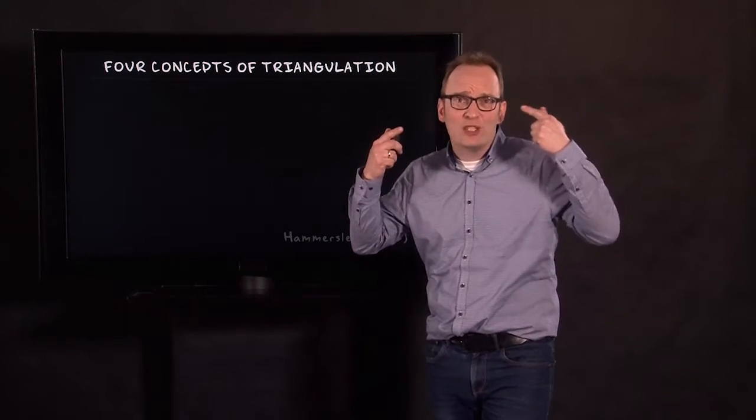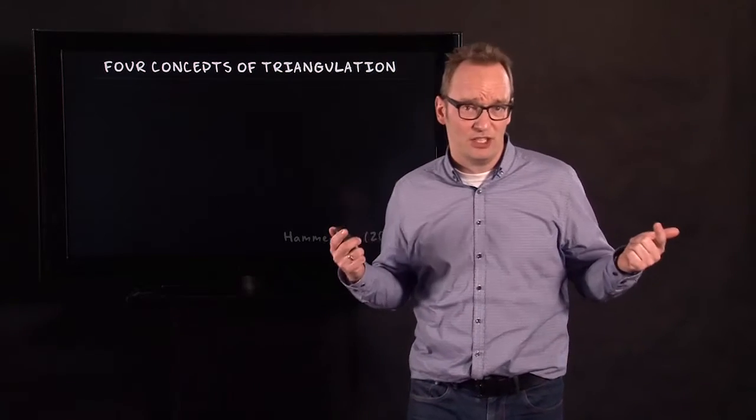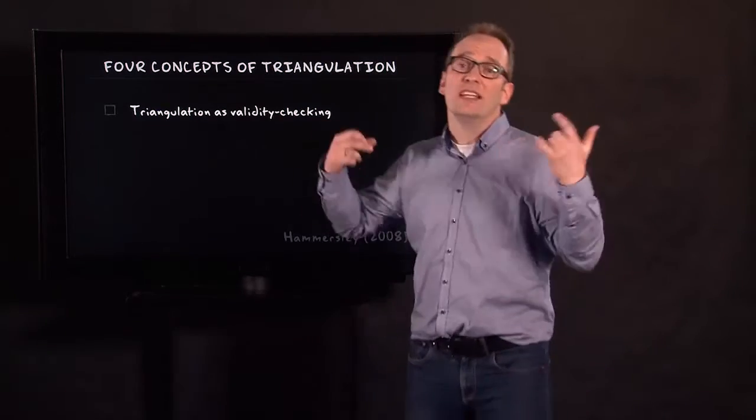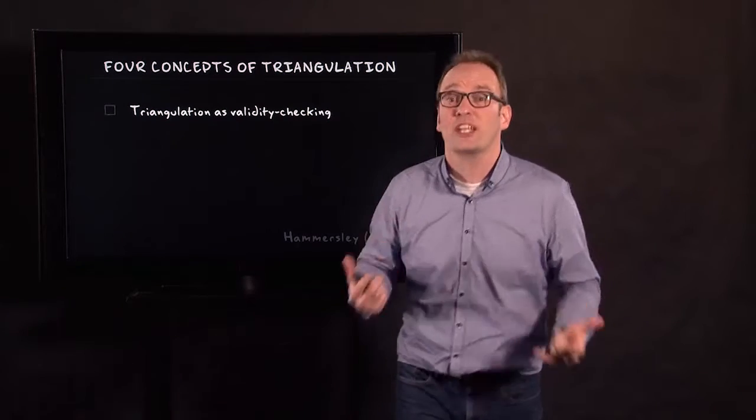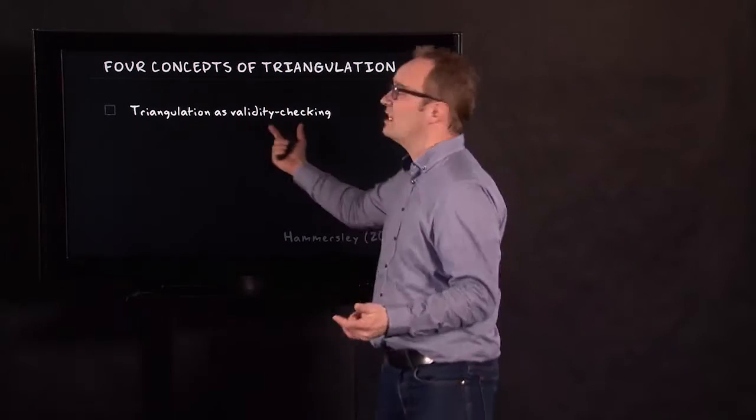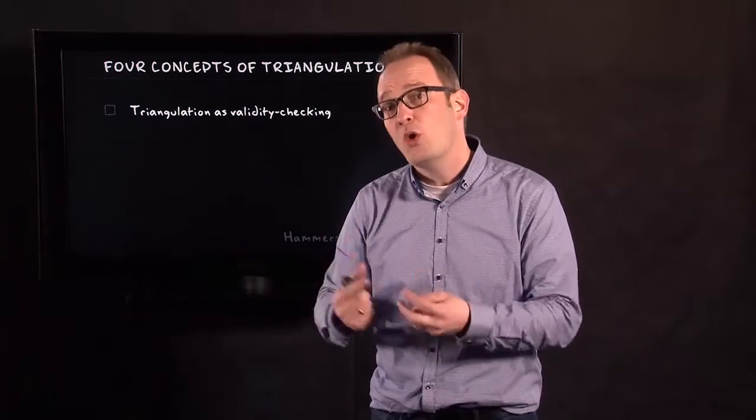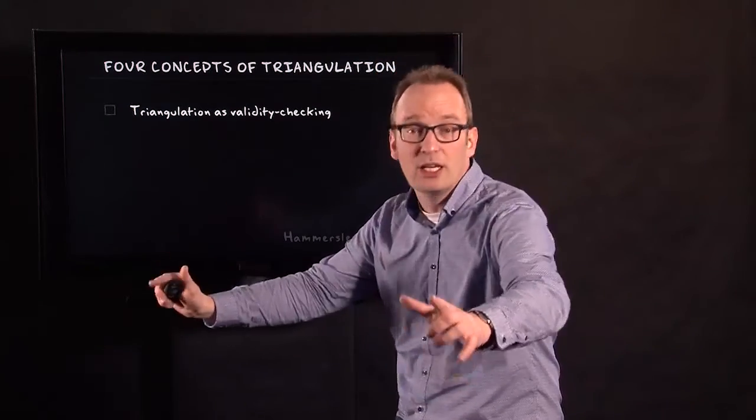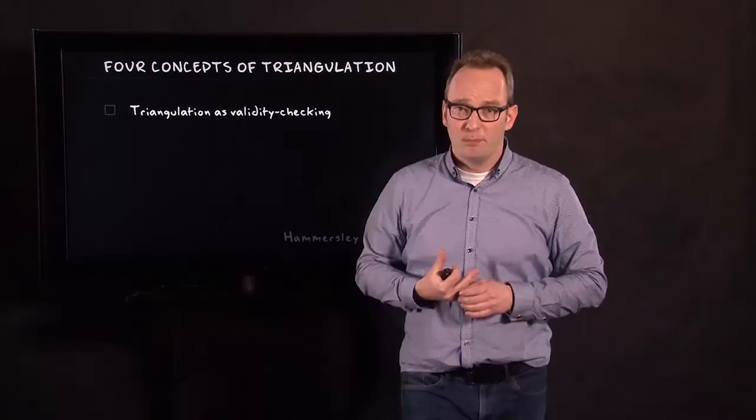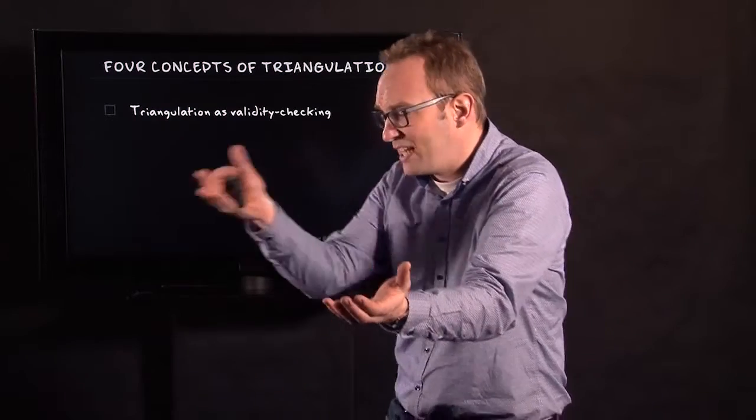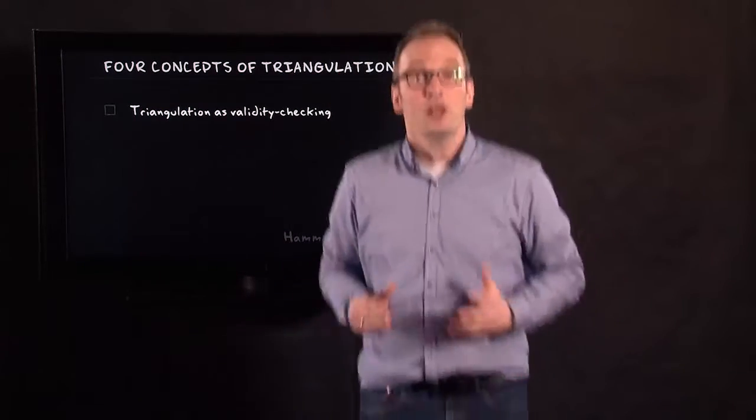Martin Hammersley distinguishes four different conceptualizations of triangulation. So, four ways of using triangulation in literature. The first one and the one that Norman Denzin started out with is triangulation as validity checking. Triangulation as a way to answer a single research question using two or more methods of data collection. So, you use observations as well as interviews in order to answer the same research question.